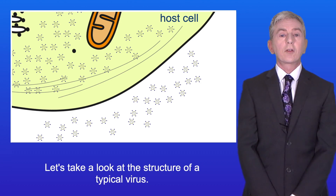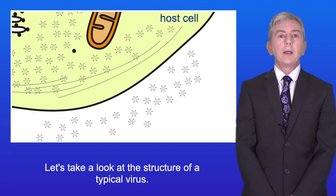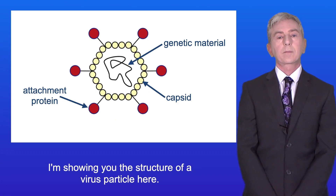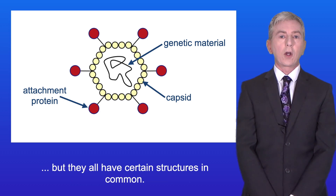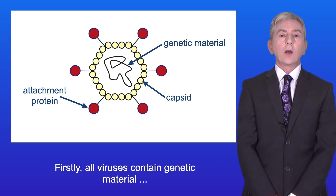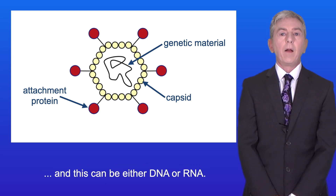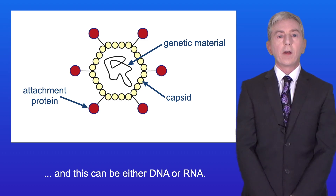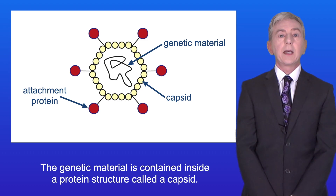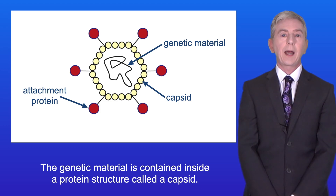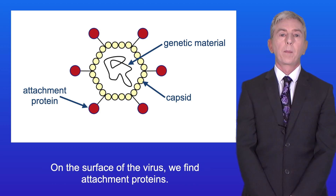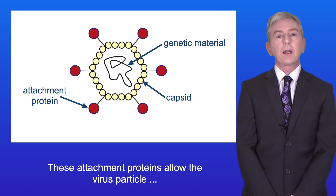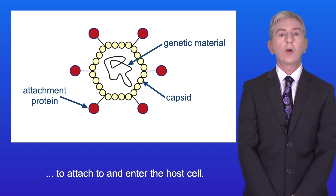Let's take a look at the structure of a typical virus. I'm showing you the structure of a virus particle here. There are millions of different types of viruses but they all have certain structures in common. Firstly, all viruses contain genetic material and this can be either DNA or RNA. The genetic material is contained inside a protein structure called a capsid. And on the surface of the virus we find attachment proteins, which allow the virus particle to attach to and enter the host cell.